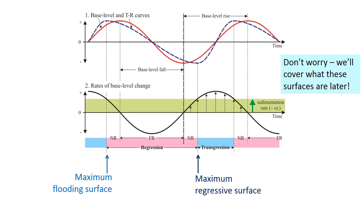The maximum flooding surface marks the end of transgression. Note that it's not the highest point on the base level curve. It is the highest point on the transgressive regressive curve. And the maximum regressive surface marks the end of normal regression. This is the maximum progradation of facies into the basin.